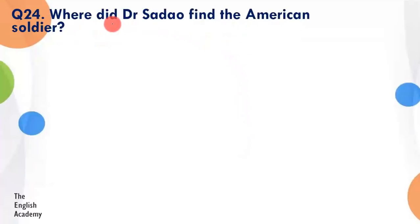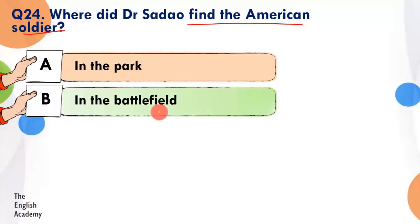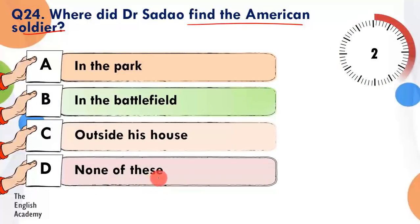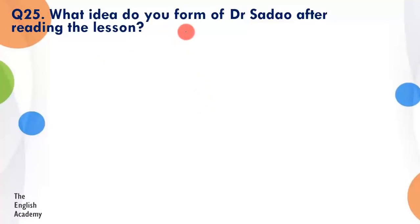Question number 24: Where did Dr. Sadao find the American soldier? Option A: in the park. Option B: in the battlefield. Option C: outside his house. Option D: none of these. The answer is Option C — Dr. Sadao ka ghar seashore par tha, to ek din jab woh sham ke samay seashore par tehal rahe the, to wahin par unhone dekha ke yeh zakhmi soldier gira pada tha.